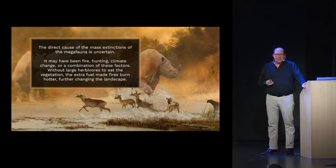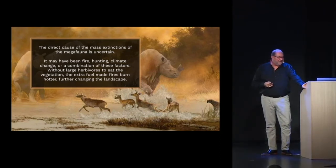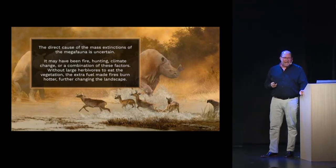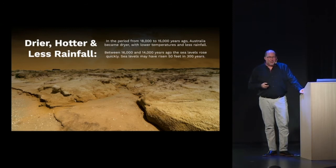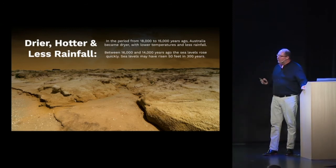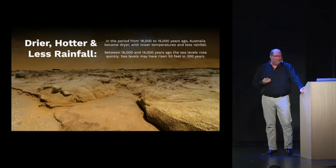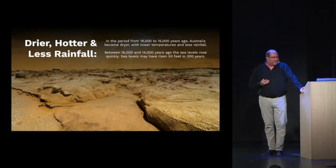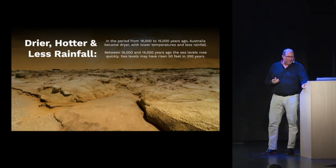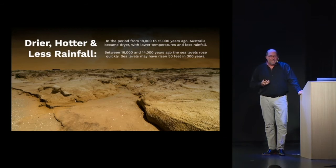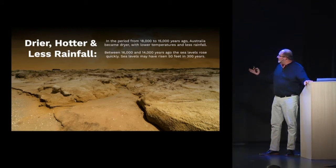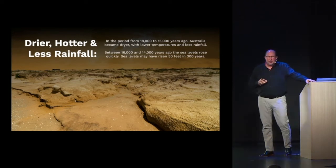Without large herbivores to eat the vegetation, extra fuel made fires burn hotter, further changing the landscape, and Australia became drier, hotter, and experienced less rainfall. In the period from 18,000 to 15,000 years ago, Australia became drier with much hotter temperatures and less rainfall. Between 16,000 and 14,000 years ago, sea levels rose quickly — it may have risen 50 feet in 300 years.